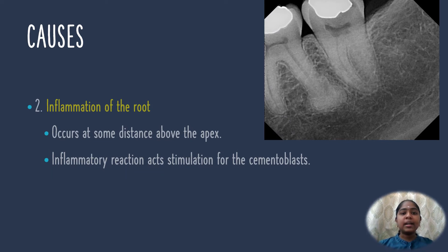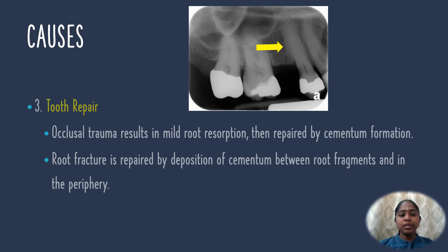Inflammation of the root occurs at some distance above the apex. The inflammatory reaction acts as stimulation for the cementoblast. Occlusal trauma results in mild root resorption, which is then repaired by cementum formation. Root fracture is also repaired by deposition of cementum between the root fragments and in the periphery.